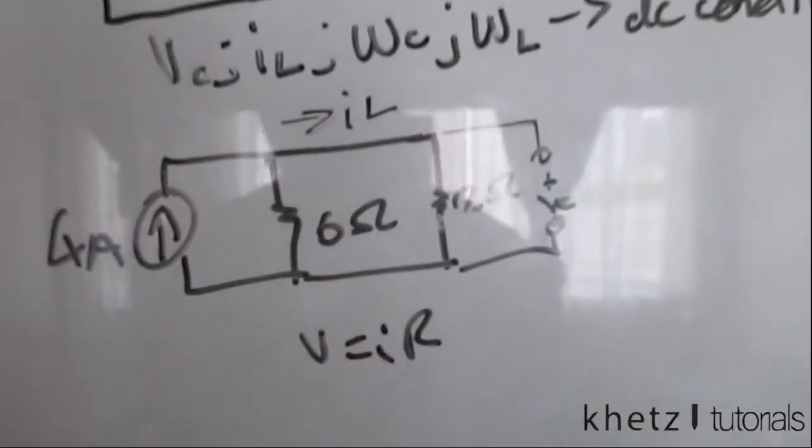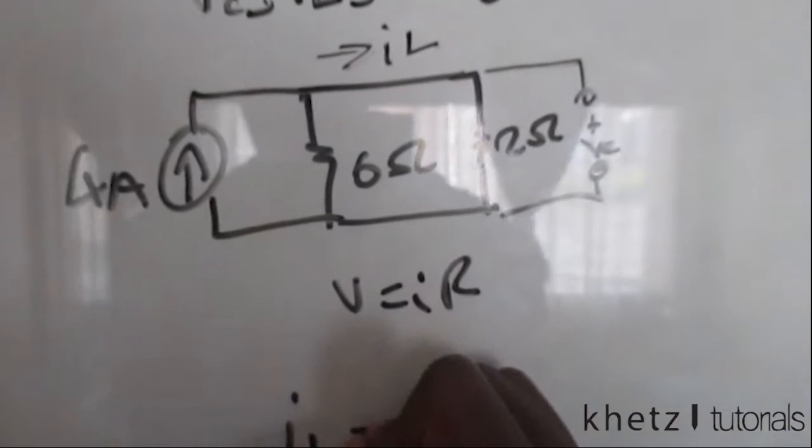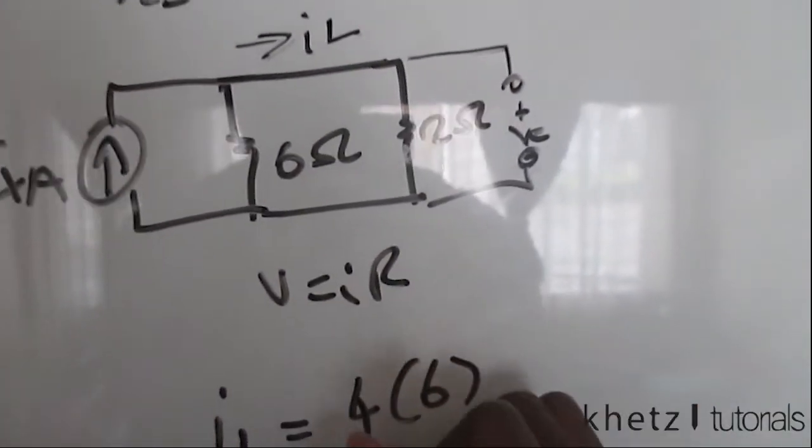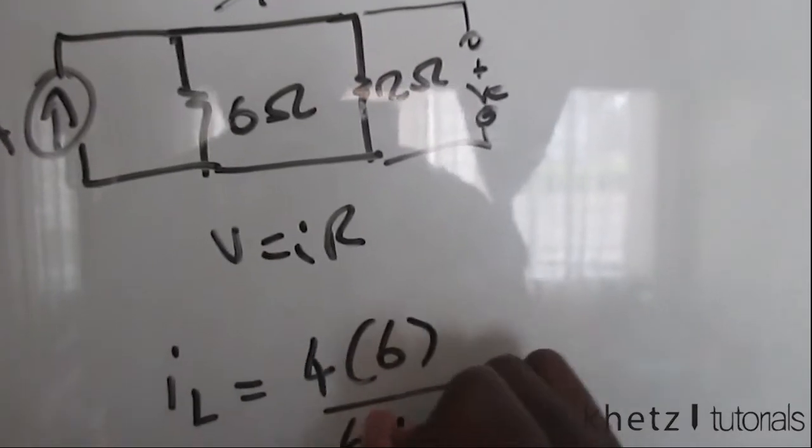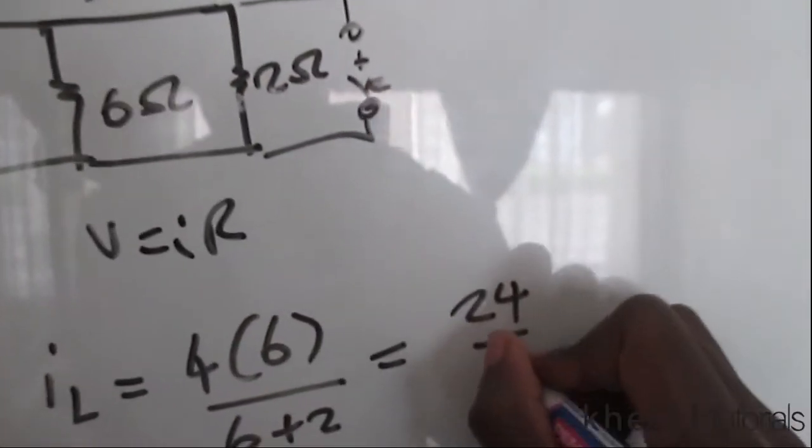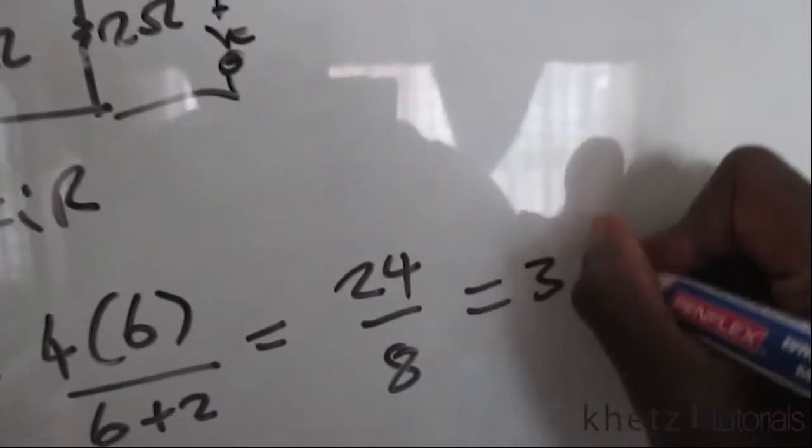So let's do that. IL equals 4, using current division, multiplied by 6 divided by 6 plus 2, which is going to give you 24 divided by 8, which is 3 amperes. So IL is 3 amperes.